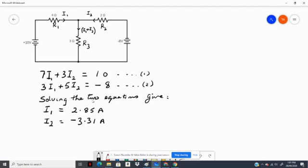Then solving for the two equations would give that I1 equals 2.85 amps, and I2 equals negative 3.31 amps.